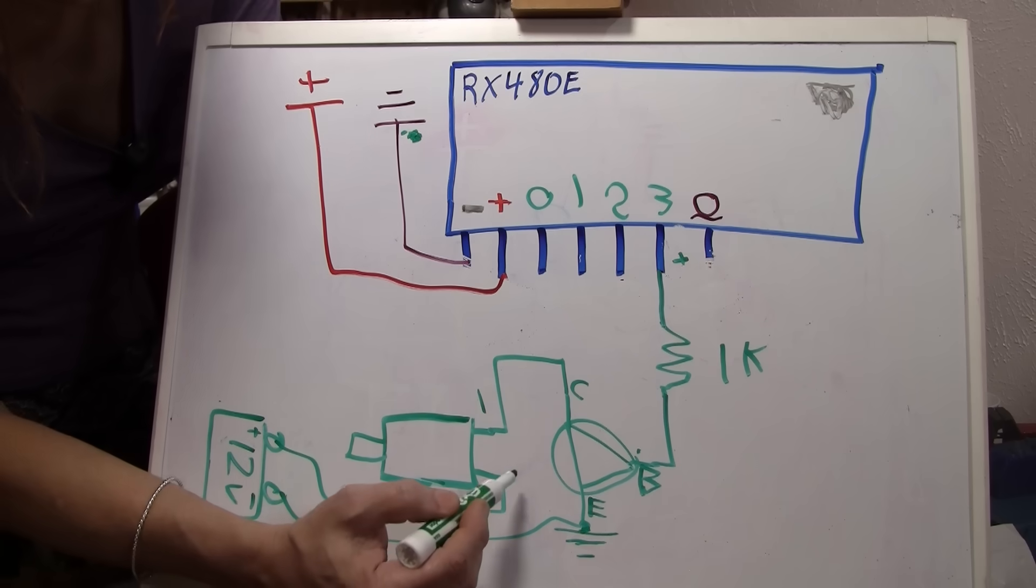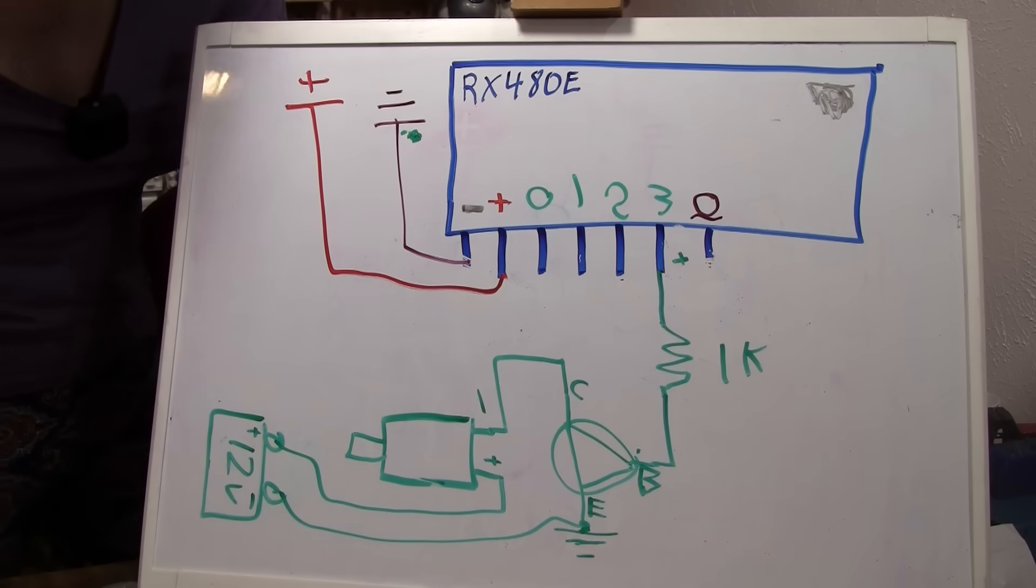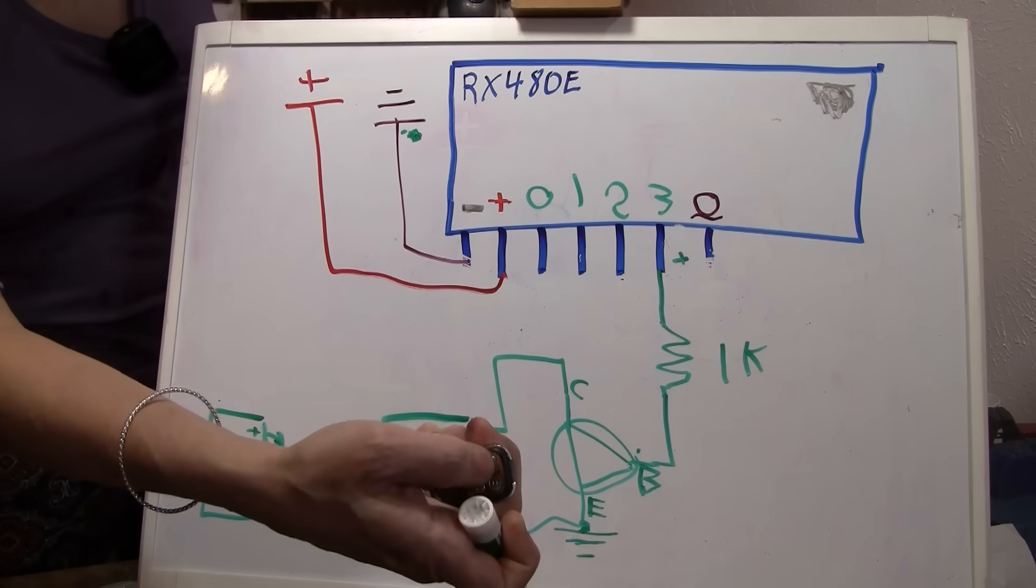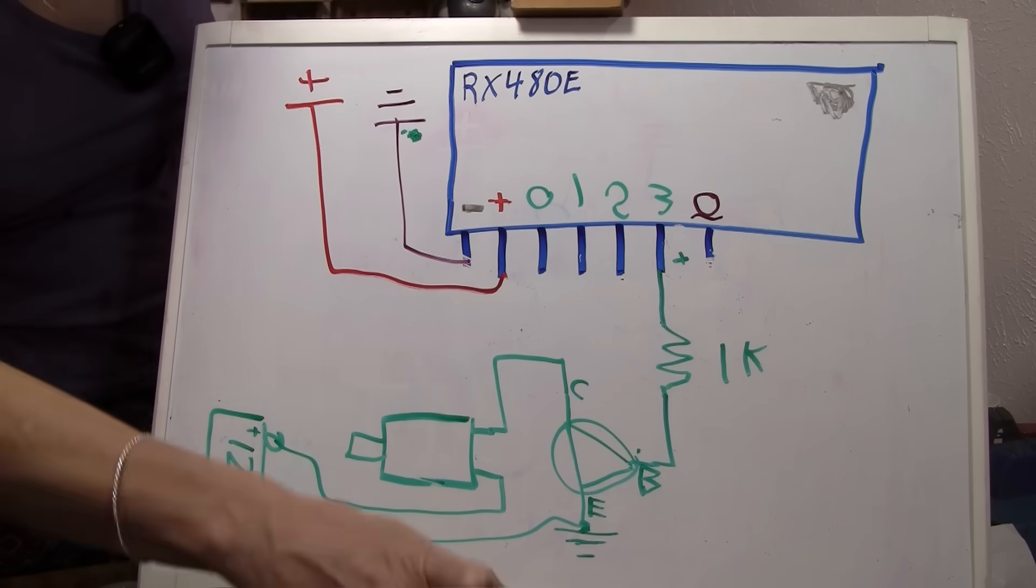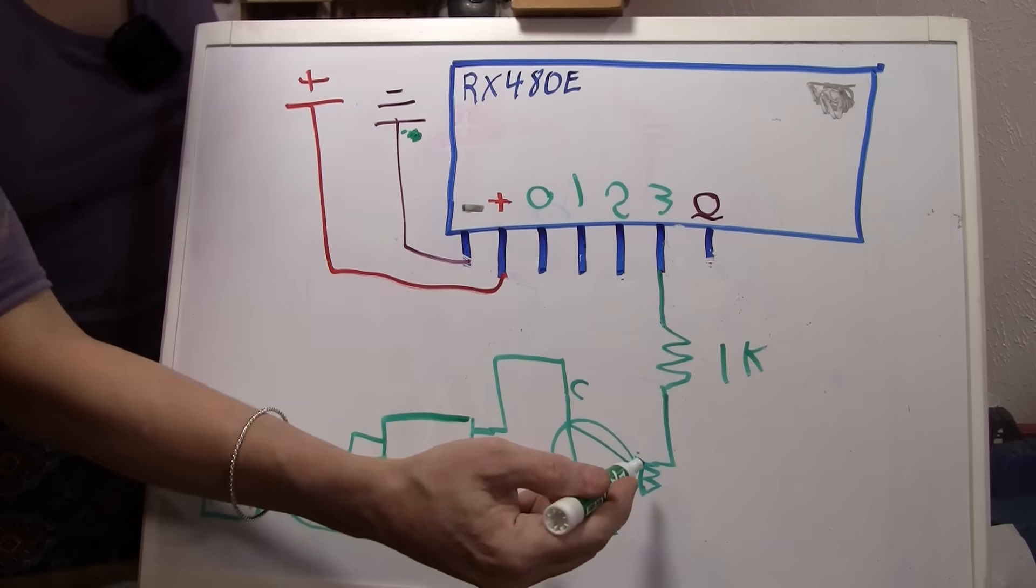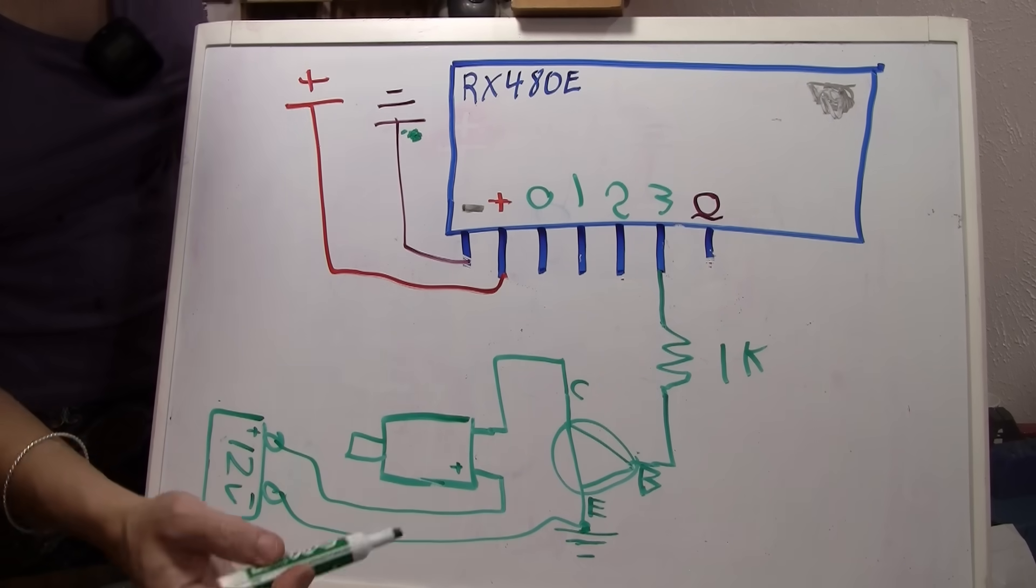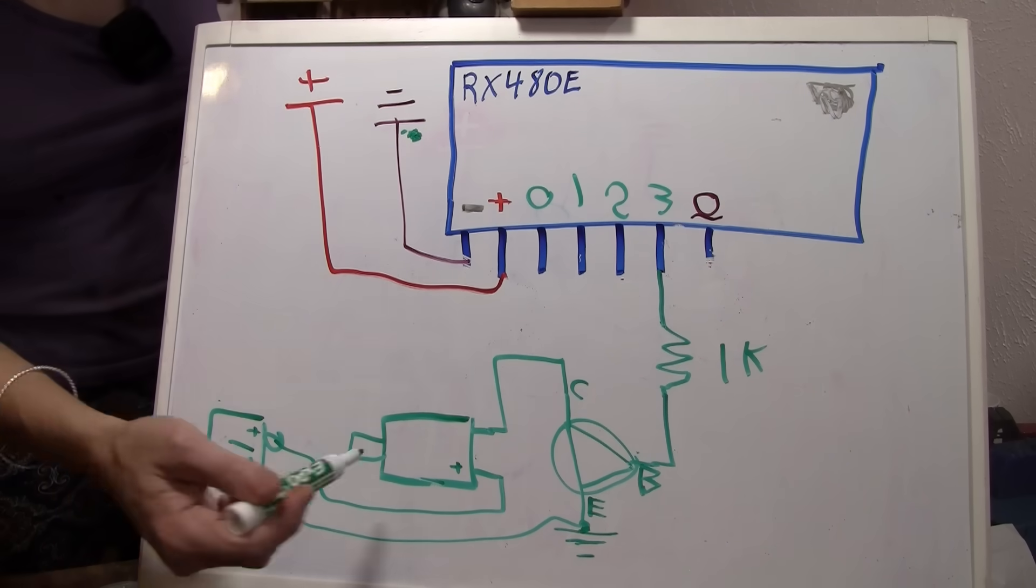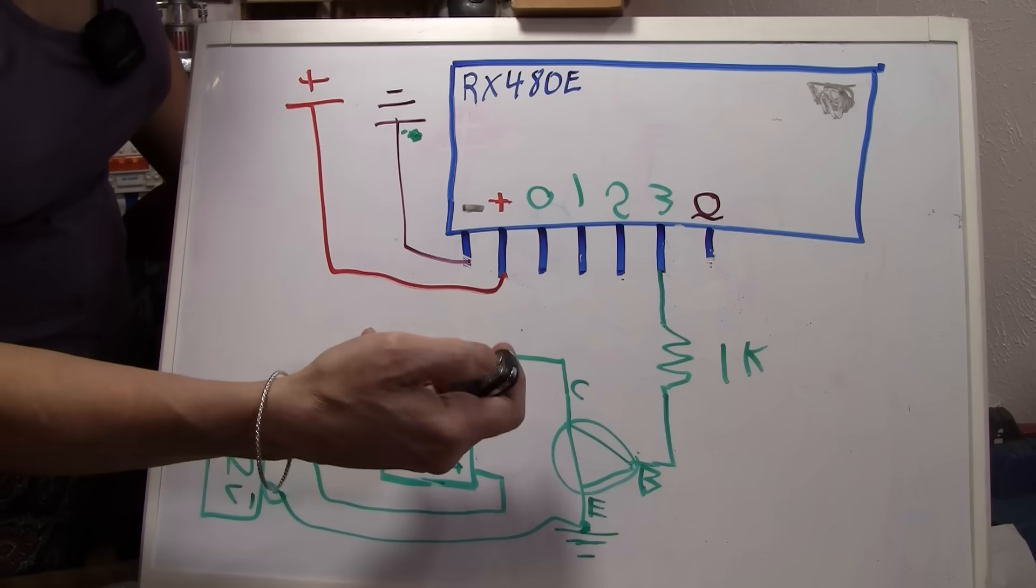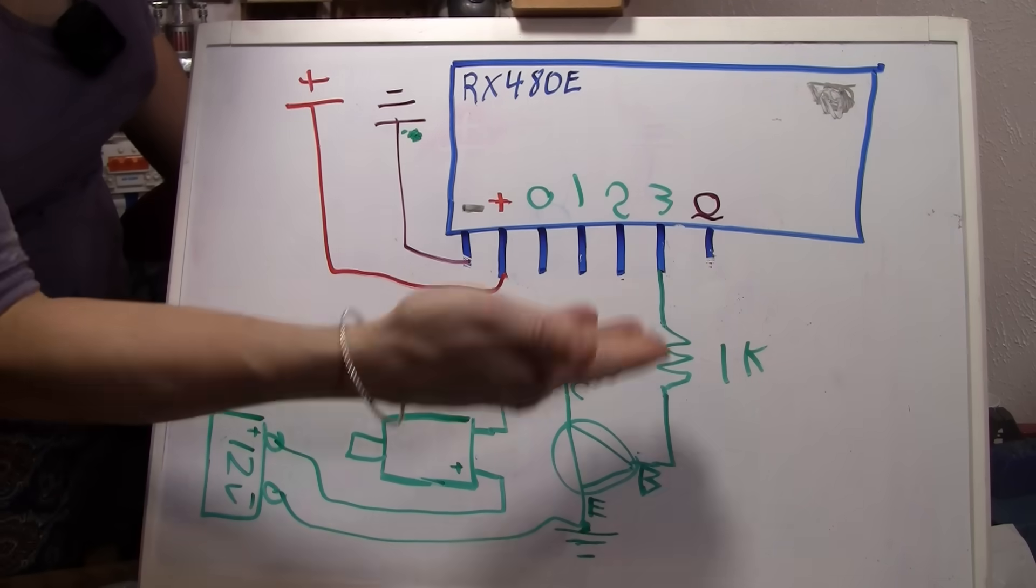When this base right here gets a positive charge, it allows a negative charge to go from the emitter to the collector, which makes this negative. And then positive is already coming through here. And so that side is positive, which now turns on the motor. So if you just had it set to momentarily on the switch, as soon as you let up, there's no more positive charge. This turns off. You still have positive coming to here, but now you have no negative and the motor turns off. Same thing if you had it to latching. If you pushed one to turn it on, you could push the other. It's going to turn it off.